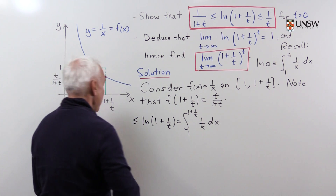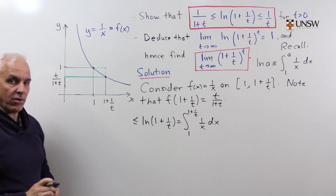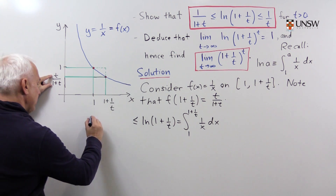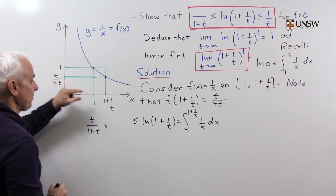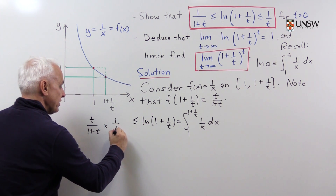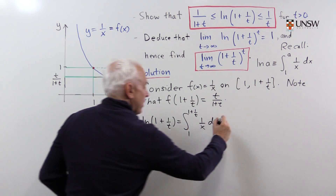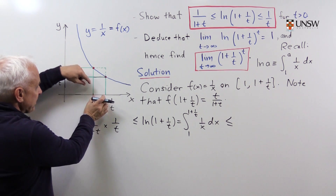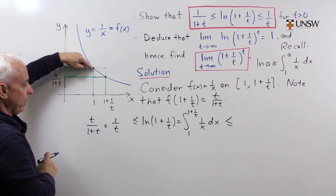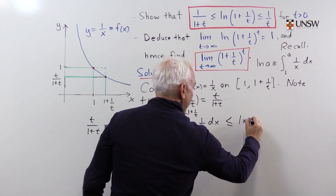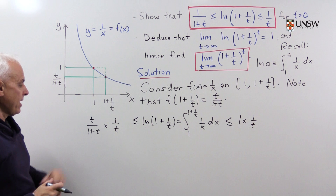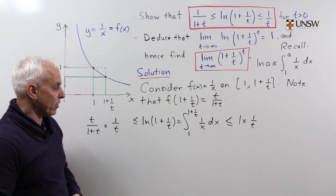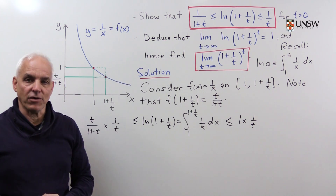This integral is going to be less than or equal to the area of the smaller rectangle. The area of the smaller rectangle — this one goes up to t over 1 plus t — times the base, which is 1 over t. And the same integral is less than or equal to the area of the bigger rectangle with the same base that goes up to the maximum, which is 1, giving area 1 times 1 over t. Since the t's cancel, we get 1 over 1 plus t is less than or equal to log of 1 plus 1 over t, which is less than or equal to 1 over t. This establishes the first inequality.